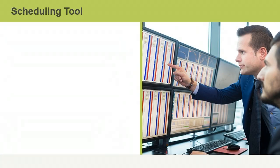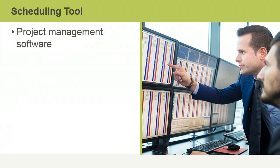Many project scheduling tools are available on the market, usually coming as part of a project management application such as Microsoft Project, and can help make scheduling easier, faster, and more accurate. These automated tools generate start and finish dates based on various inputs such as activities, network diagrams, resources, and activity durations. These are very helpful in planning a successful project schedule.